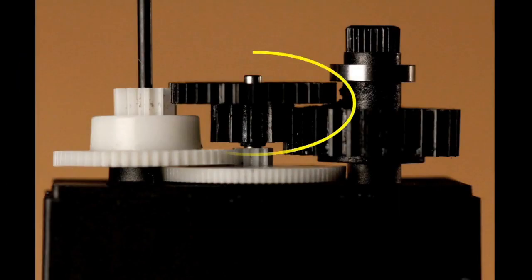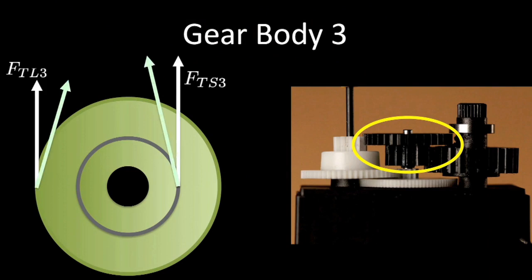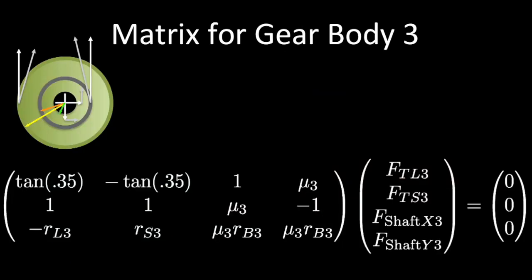Now let's work on the model of the next gear in the train, the one with 16 teeth and 36 teeth molded together. Again, we model the system by positing that there are four unknown forces acting on this single body having two gears molded together. And we can name those forces FTL3, FTS3, F shaft X3, and F shaft Y3. And we obtain this matrix.